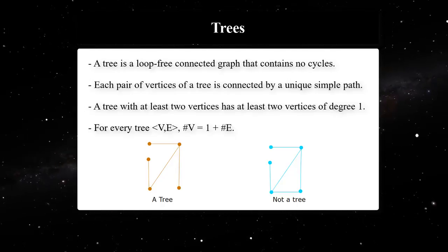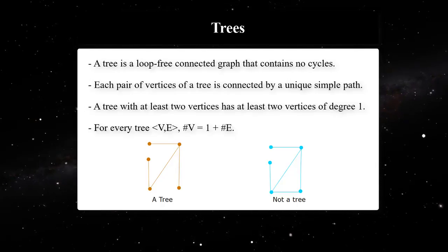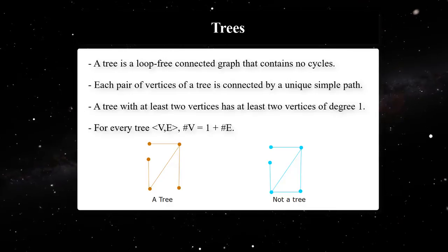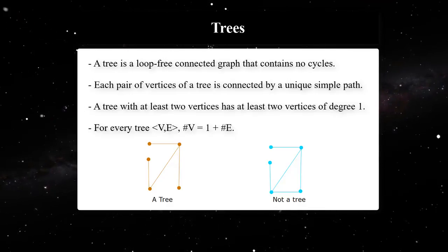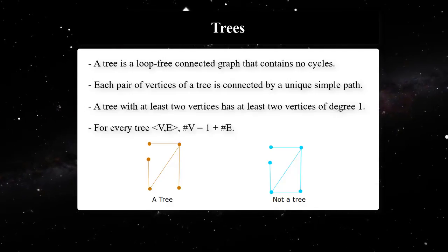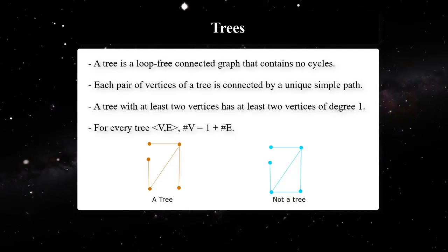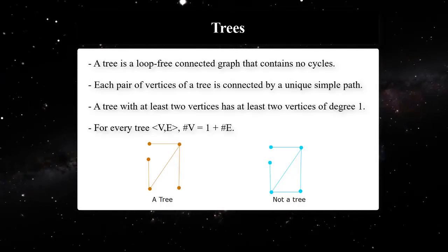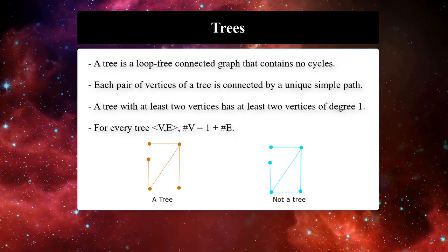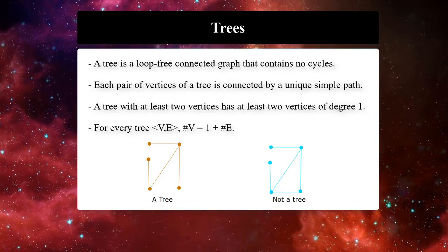Do you remember what acyclic means? A graph having no cycle is said to be acyclic or can also be called a forest. It follows immediately from the definition that a tree has to be a simple graph and has a unique simple path that connects each pair of its vertices.